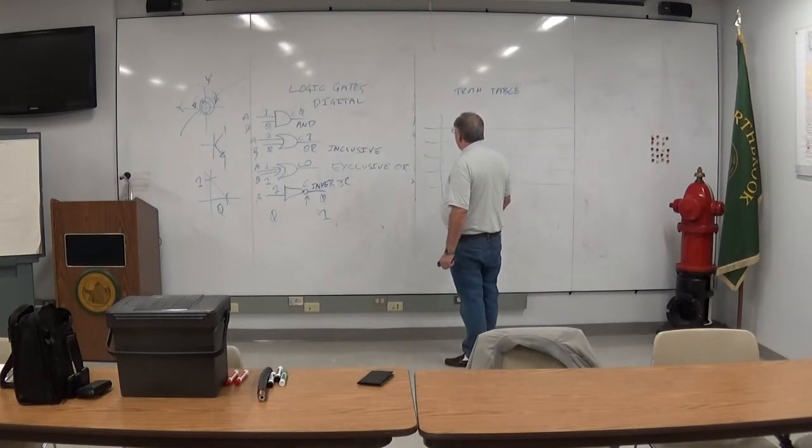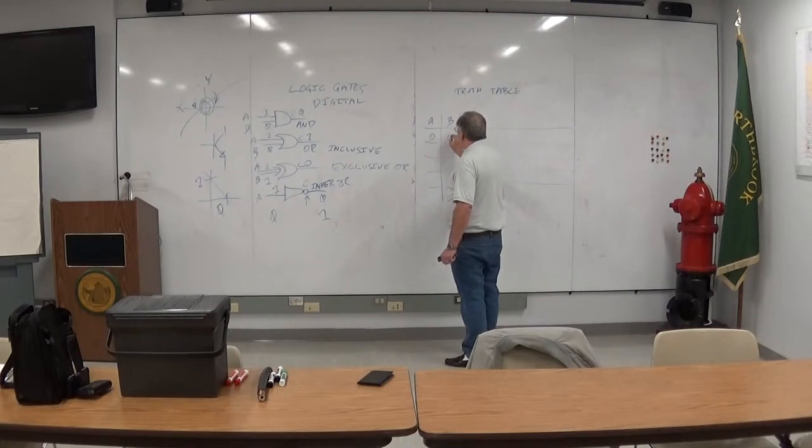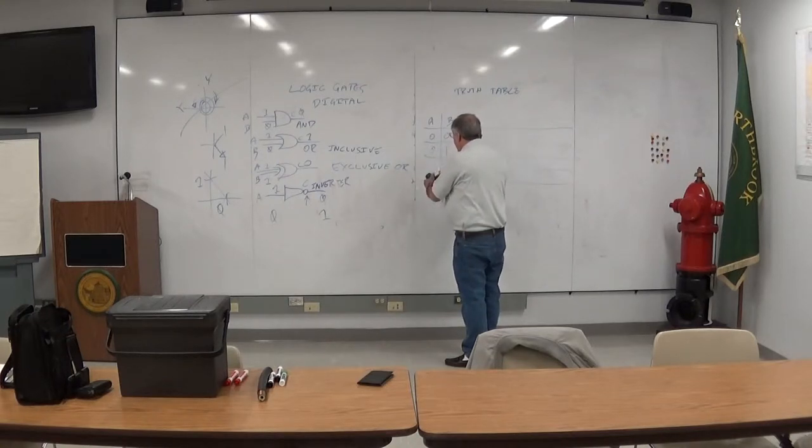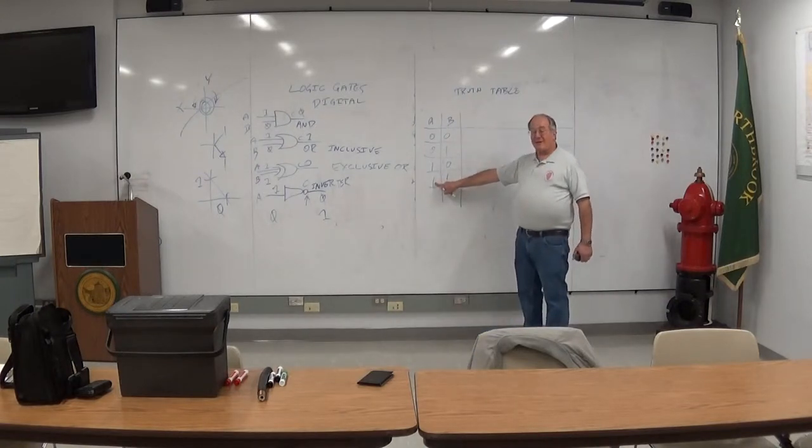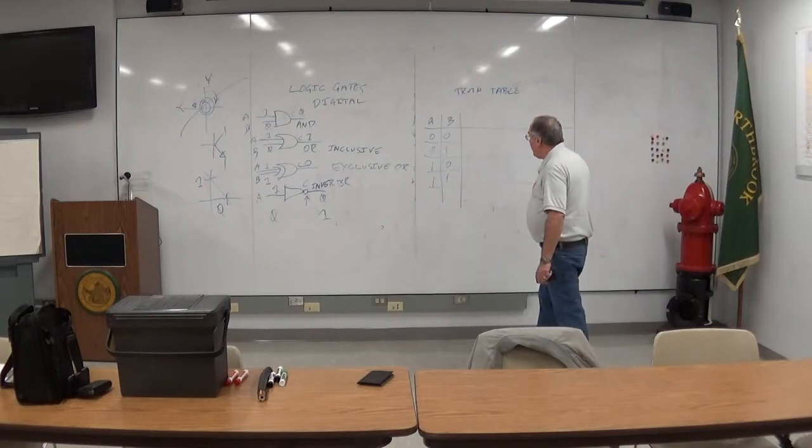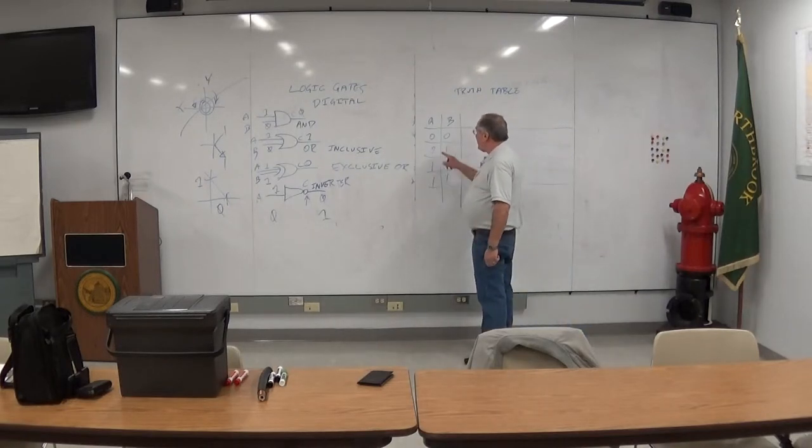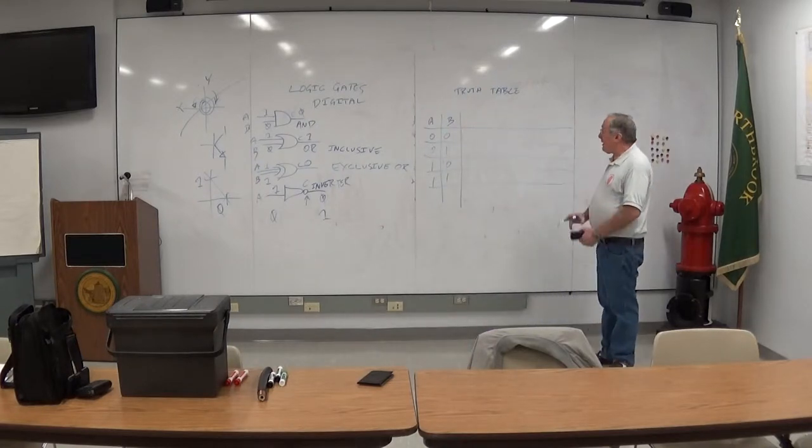So we're going to start out with a number. This will be A. This will be B. And we're just going to count up to three. That's zero. That's one. That's two. That's three. Why is that three? One times two to the first power. One times two to the zero power. Two plus one is three. Two plus nothing is two. One plus nothing is one. And nothing plus nothing is nothing. It fits.